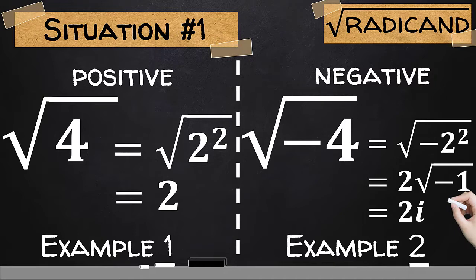Notice the values of the principal square roots. In example number 1, since our radicand is positive, we have a real principal square root. However, since our radicand is negative, our principal square root contains i, which is the symbol for imaginary numbers. If your radicand is positive, the principal square root is real. But if the radicand is negative, you will get an imaginary principal square root.